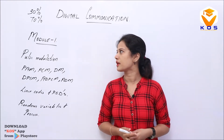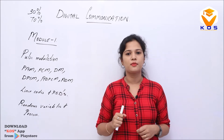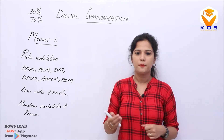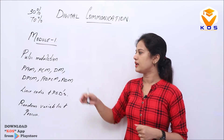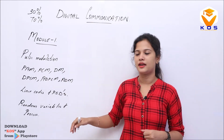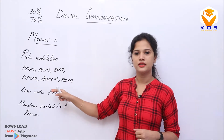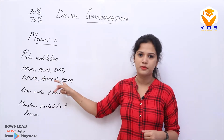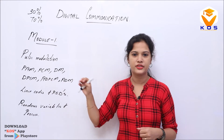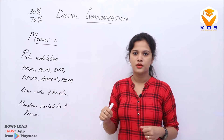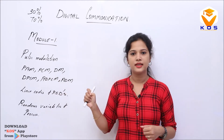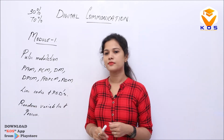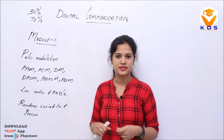Module 1 covers pulse modulation. The subtopics include pulse amplitude modulation, pulse code modulation, delta modulation, and adaptive delta modulation. We will also be learning about line codes and power spectral density.